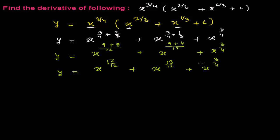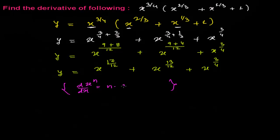To find the derivative, we may have to rearrange the given function in an appropriate way to work comfortably. I first solved it properly so that applying the power rule is now easy. The power rule states that the derivative of x to the power n with respect to x is n times x to the power n minus 1.